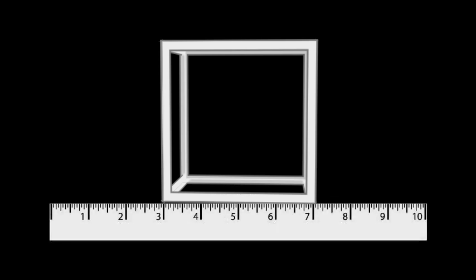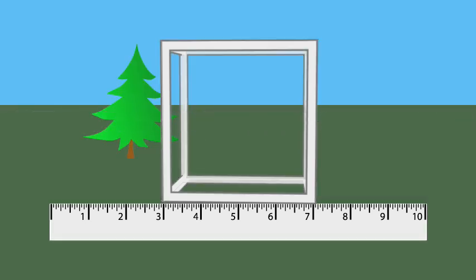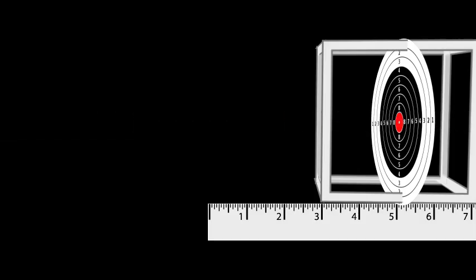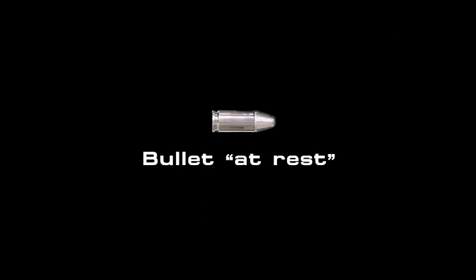In some ways, we already do this. When we speak of the speed of a bullet, we're describing that speed relative to something - the ground or perhaps the target. Because we could just as easily describe the bullet as being at rest and the target moving.